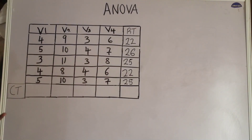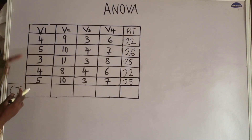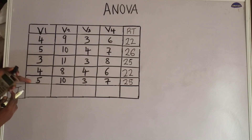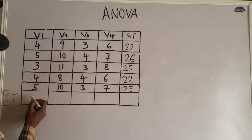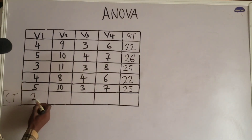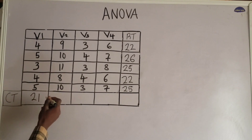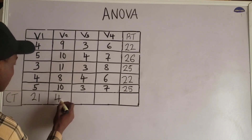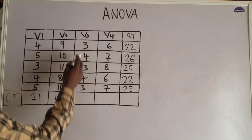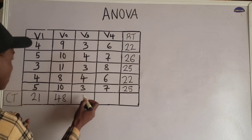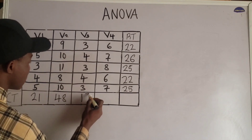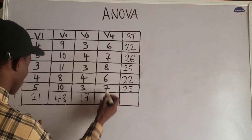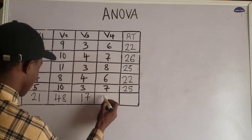Now let us calculate the column total. For the first column, adding 4, 5, 3, 4, 5 gives 21. For the second column, that is 48. For the third column, that is 17. And for the fourth column, I got 34.